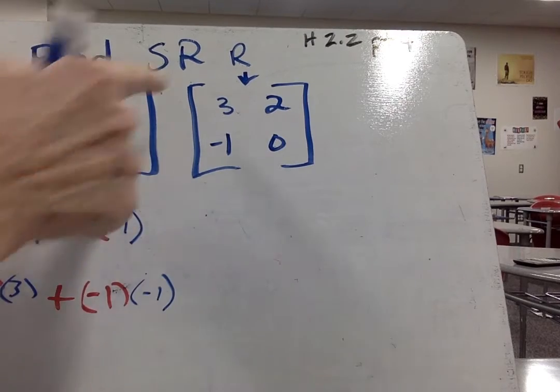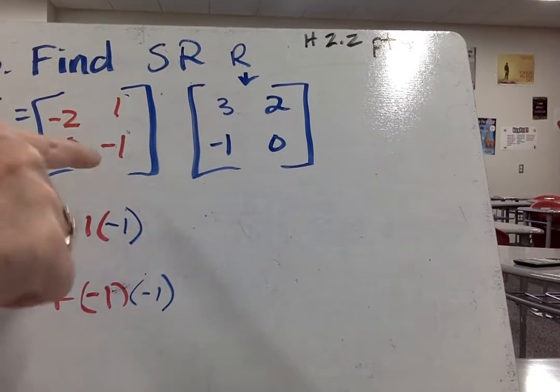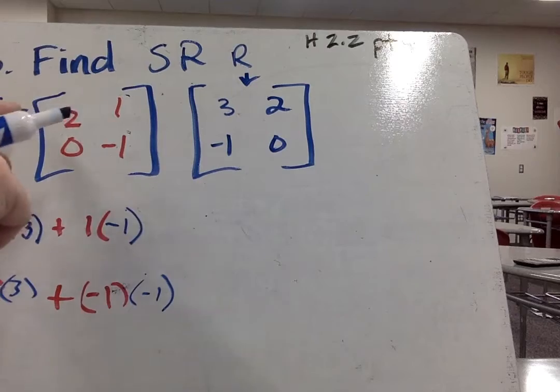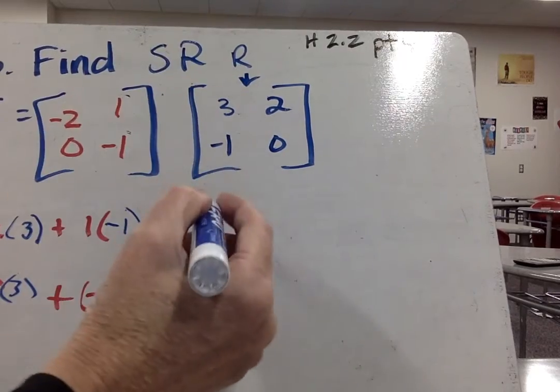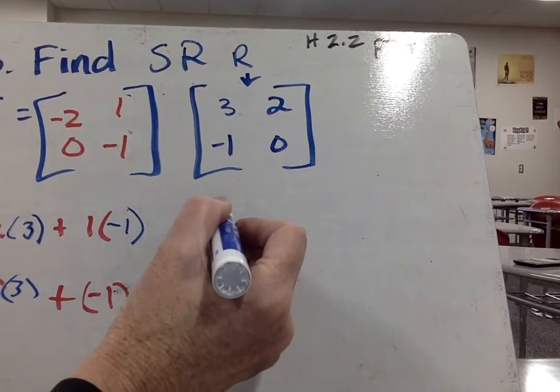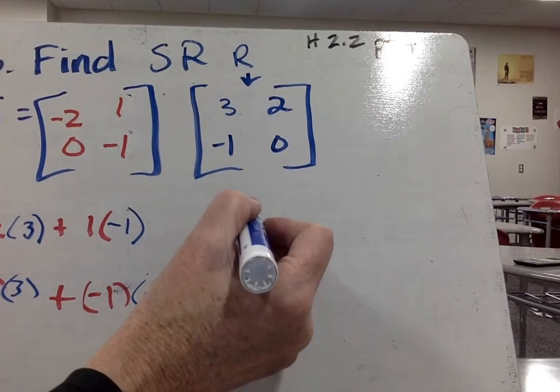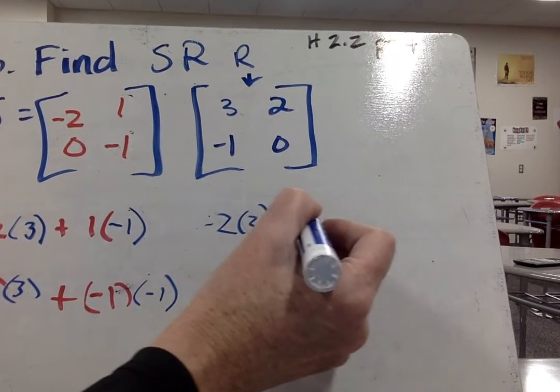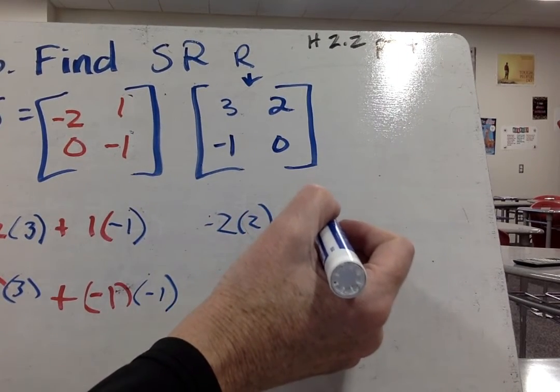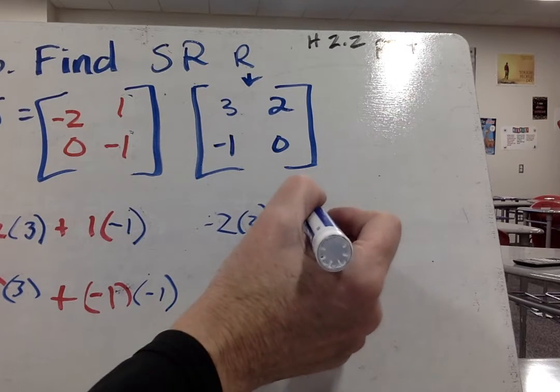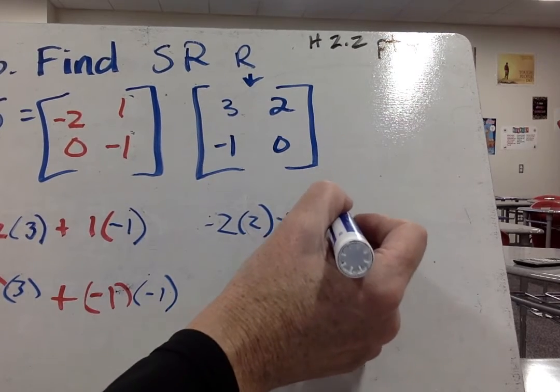Now we're going to go first row, second column. And I'm just going to do all those one color, it's too hard to do two colors. Plus 1 times 0. So first row, second column. Now we do second row, second column.